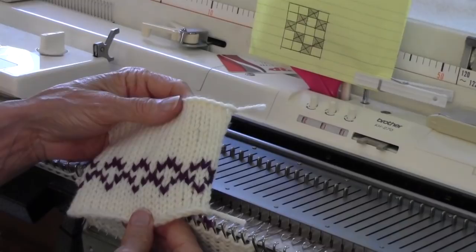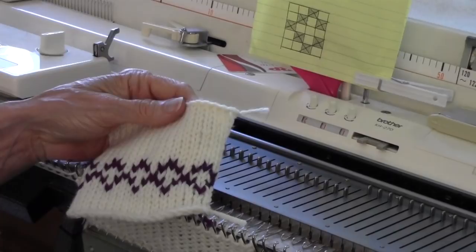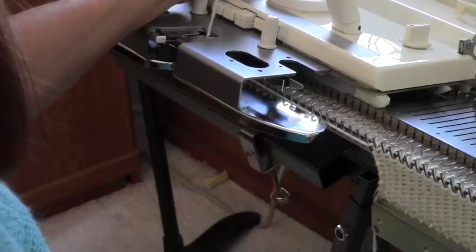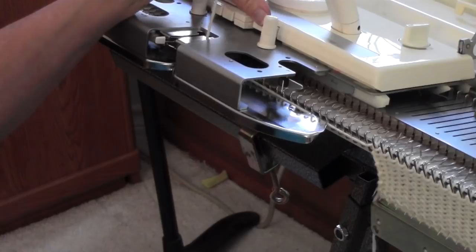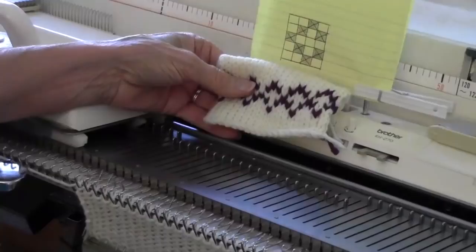The secret is to have a setting on your carriage that allows you to slip needles and knit only the selected needles. On my machine, the secret is to depress the two buttons called part. When those buttons are in, the only needles that will knit are the needles that are moved out forward toward your body.